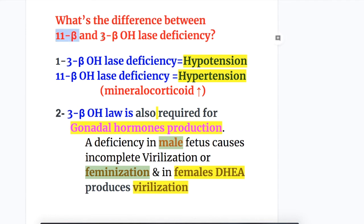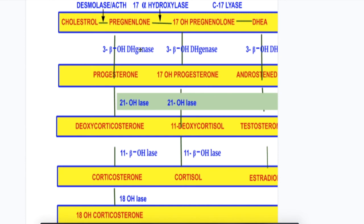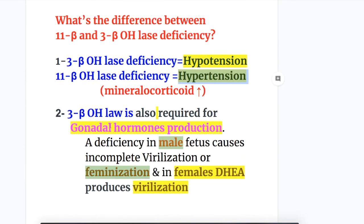What's the difference between 3 beta and 11 beta hydroxylase deficiency? In 3 beta hydroxylase deficiency there is hypotension, and in 11 beta hydroxylase deficiency there is hypertension due to increased mineralocorticoid. In 3 beta deficiency, production of both mineralocorticoid and cortisol is impaired, whereas in 11 beta deficiency there is production of deoxycorticosterone, a potent mineralocorticoid causing hypertension. Additionally, 3 beta hydroxylase is required for gonadal hormone synthesis, so deficiency in a male fetus causes feminization.